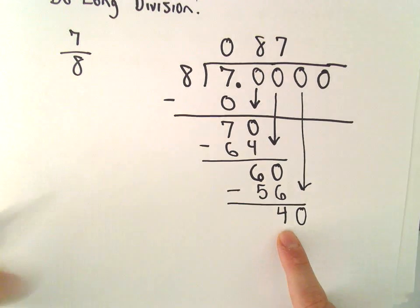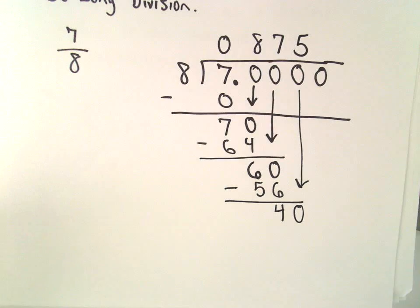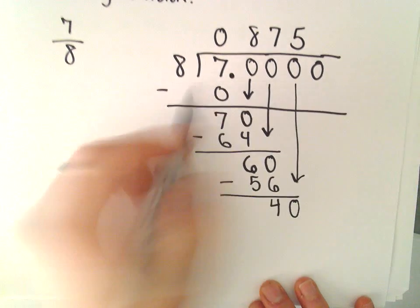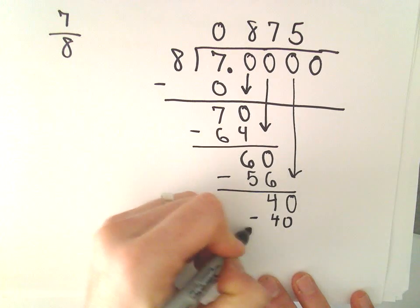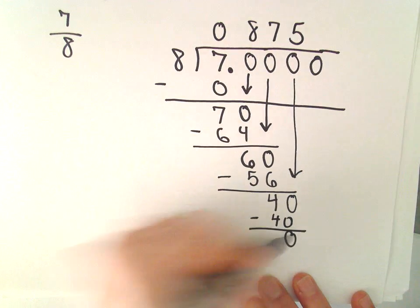Well, eight will go into forty exactly five times. Five times eight would be forty. We could subtract and we would get zero, but then we would just simply drop down our next zero.